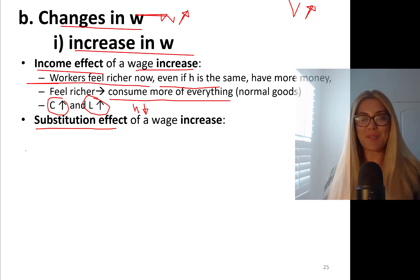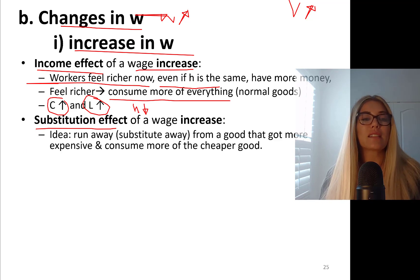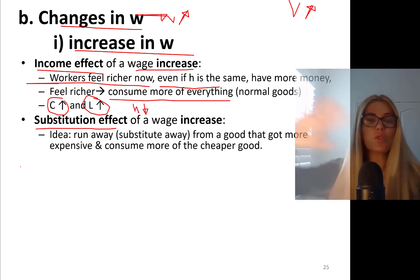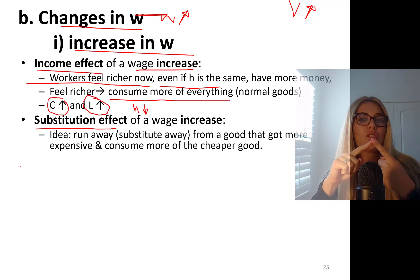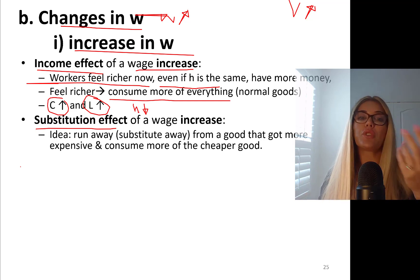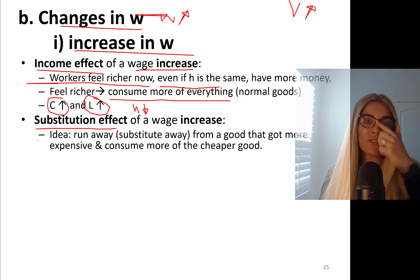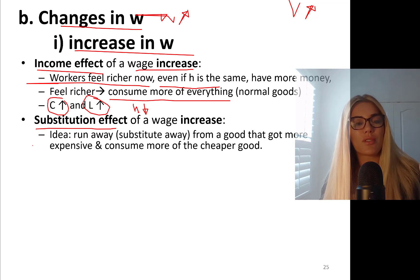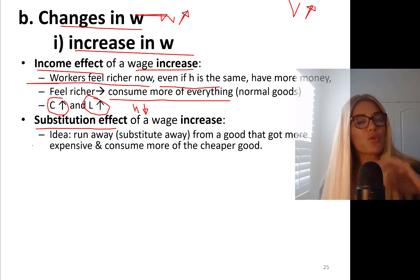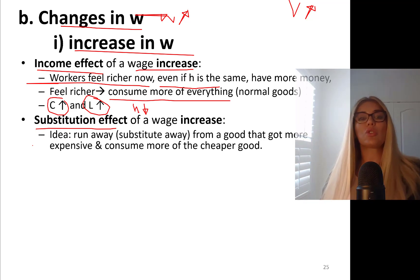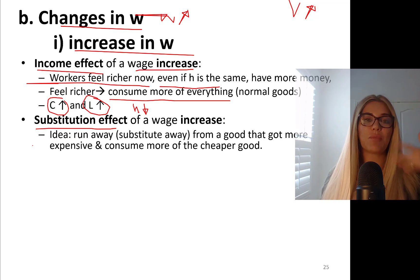At the same time, we also have the substitution effect. Substitution effect is all about relative prices — the idea that you should substitute away from a good that is relatively more expensive. Between consumption goods and leisure, you need to run away from the more expensive good and consume more of the cheaper good.